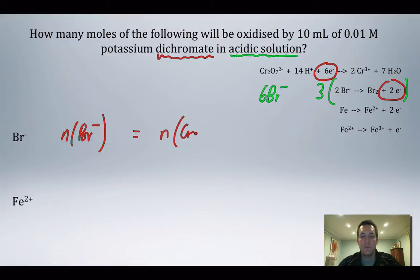If I write myself a little expression saying that the number of moles of bromide is related to the number of moles of dichromate, then really all I need to do to solve this particular question is find the number of moles of dichromate and put the right factor in here.